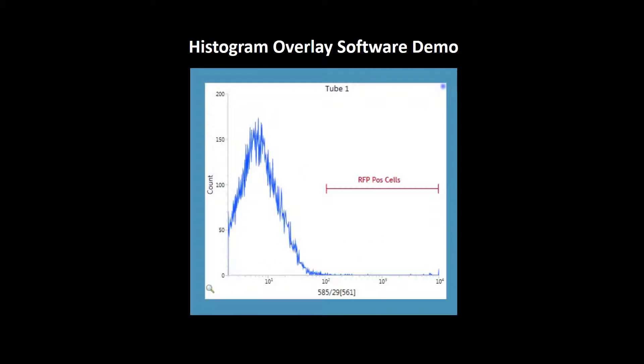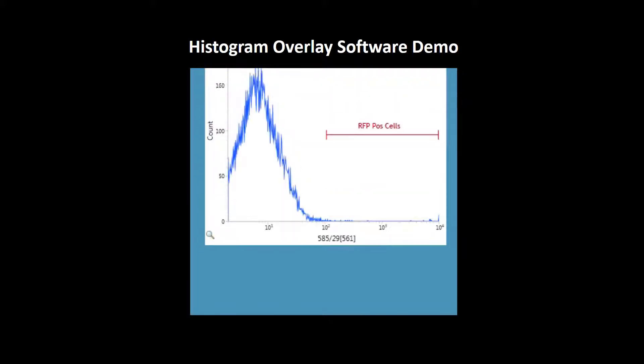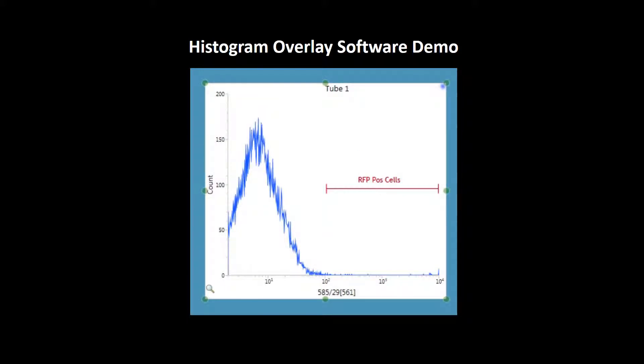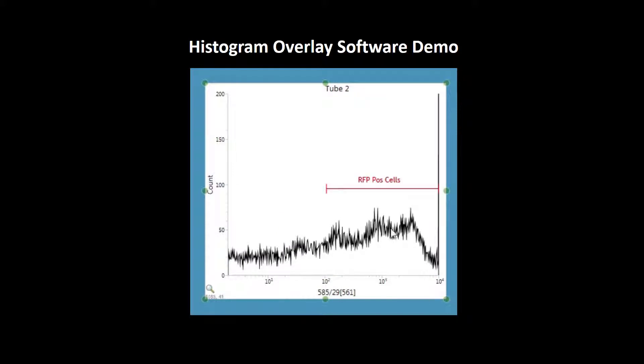I will just check whether I have RFP positive cells in this region or not. Okay, I have RFP positive cells here. I want to show in the same plot that this is my unstained cells and this is my RFP positive cells.